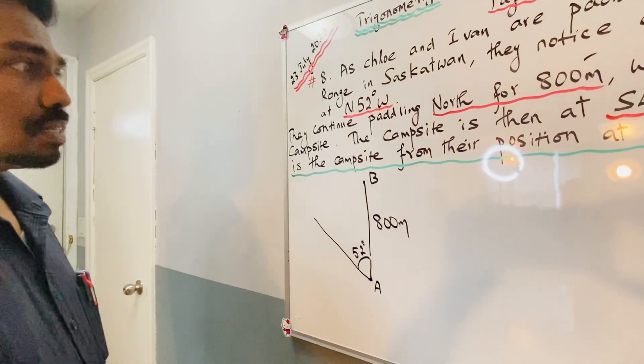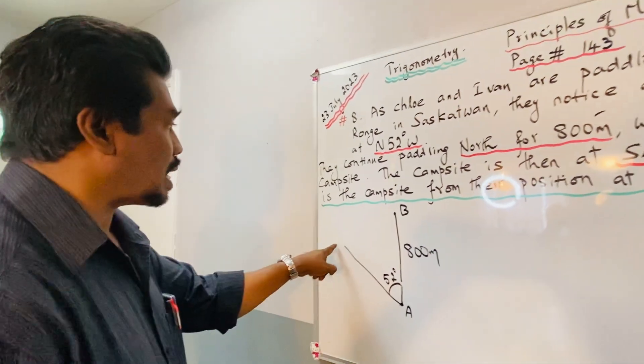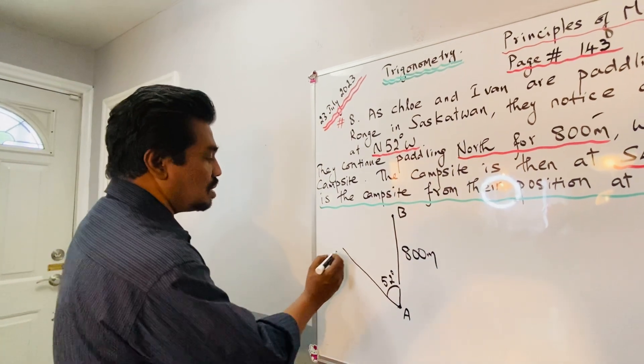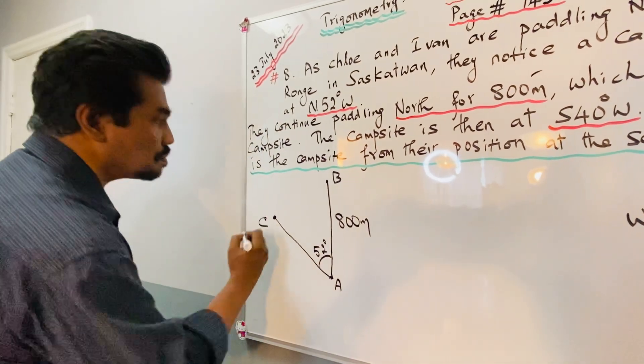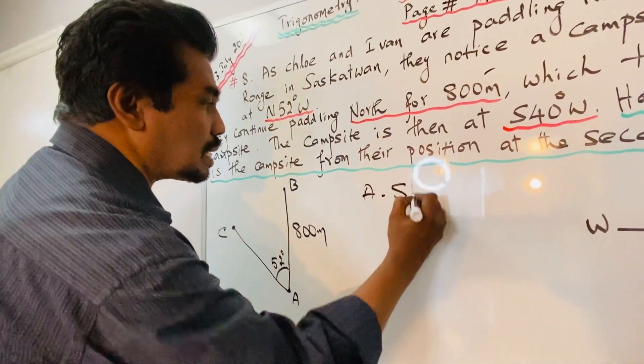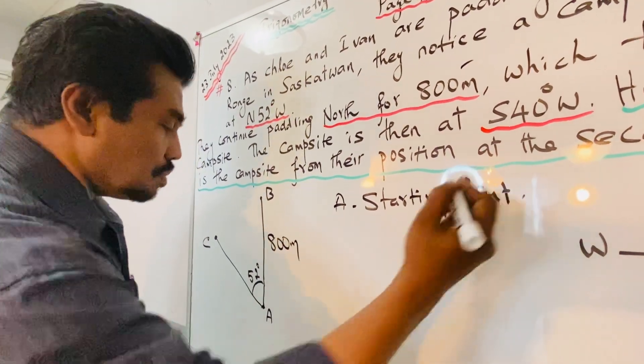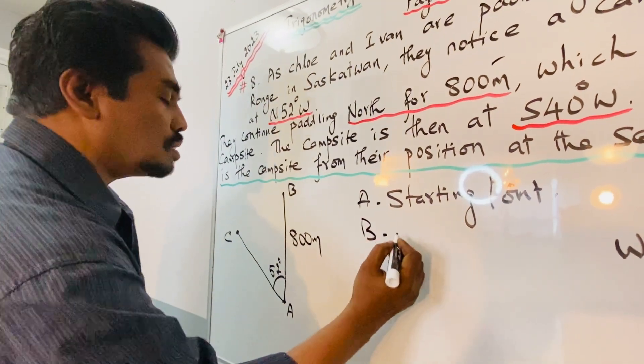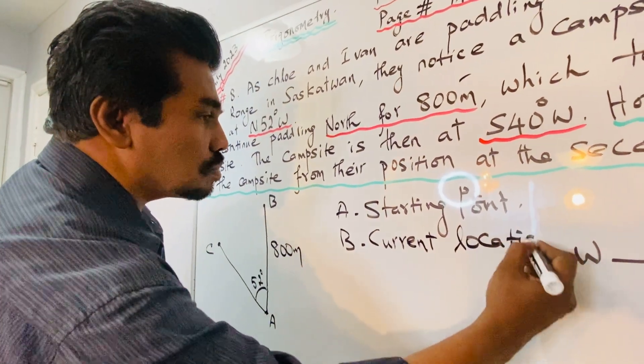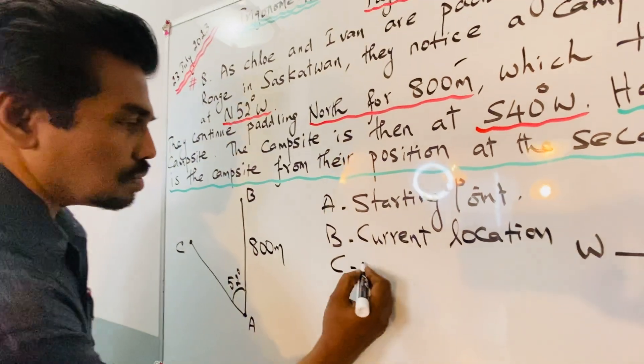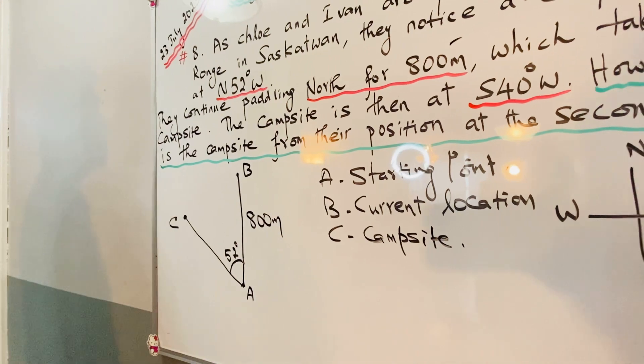They continue paddling north for 800 meters, which takes them past the campsite. So the campsite will be approximately here. Let's put C for campsite. A is the starting point, B is the current location, and C is the campsite.